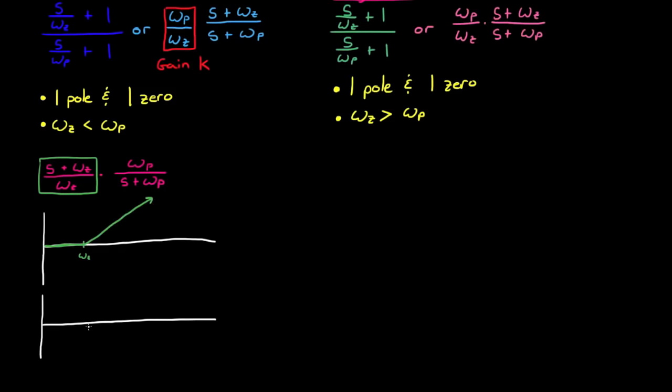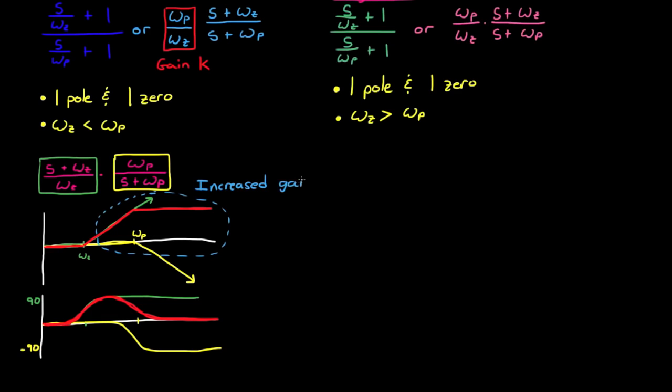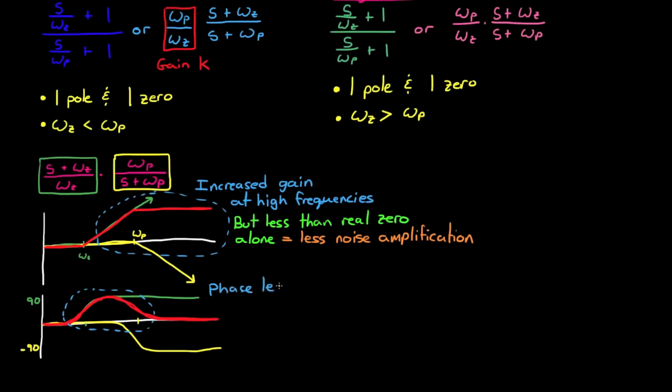Now we can sketch the approximate Bode plot for each of these two transfer functions on the same plot, so you can see what they look like in relation to each other. The zero is going to add 90 degrees of phase and amplify high frequencies, whereas the pole is going to subtract 90 degrees of phase and attenuate the high frequencies. And when you multiply the two transfer functions together, that's the same as adding the two lines in the Bode plot. So our transfer function is going to behave like a real zero early on at the low frequencies and then get countered by the real pole at the higher frequencies. So the red lines are the approximate Bode plots for our phase lead compensator. One of the things to note about our phase lead compensator is that it increases the gain of high frequency inputs, but not as much as a zero would all on its own. So this means that it's going to be less noisy than a derivative controller on its own.